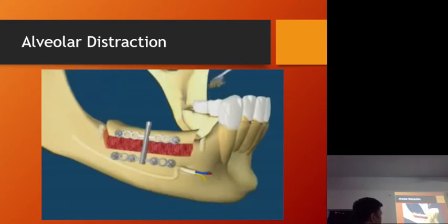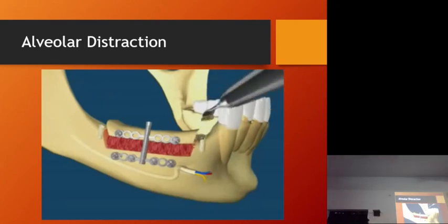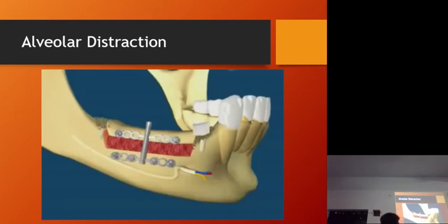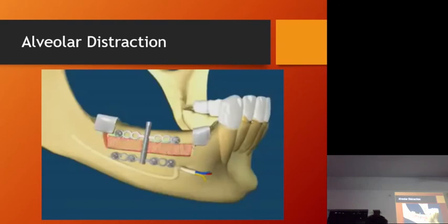We also perform some bone grafting. To induce good bone graft uptake, we create holes in the bone to induce bleeding. Once the bleeding is there and the blood mixes into the bone graft, clot formation leads to good bone formation. In any bone grafting, we have to induce bleeding. Once the bone height is achieved, we remove the distractor device.